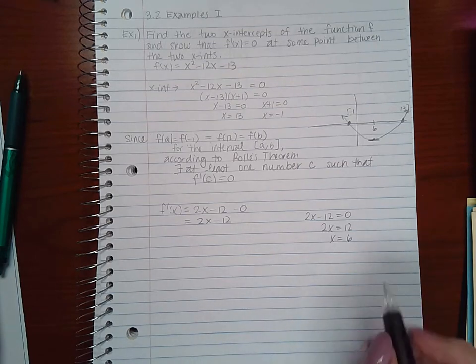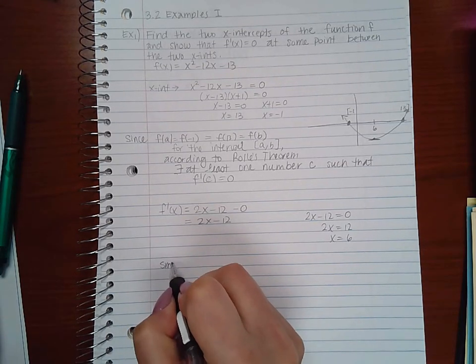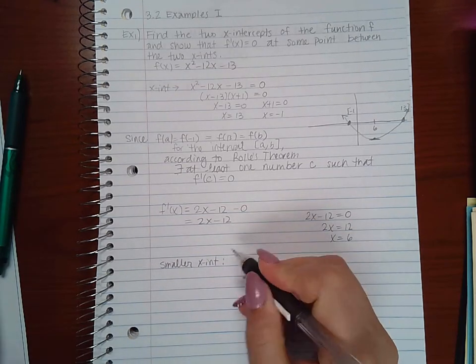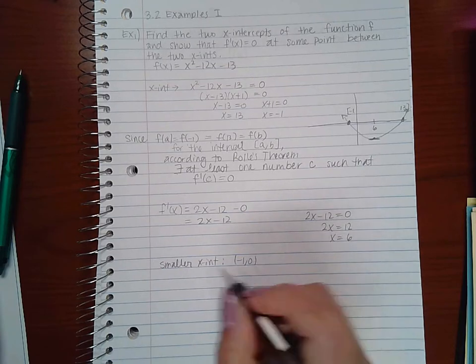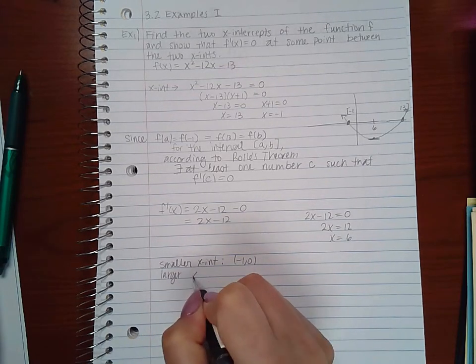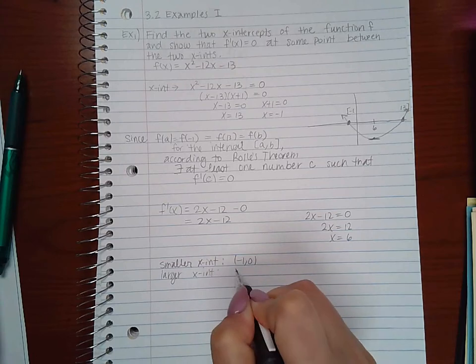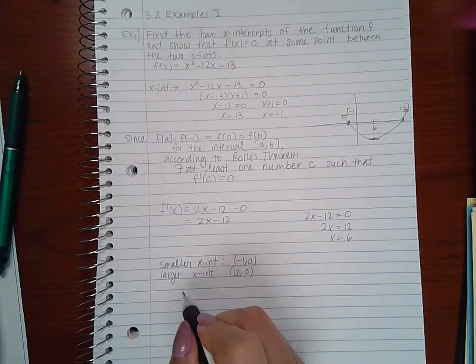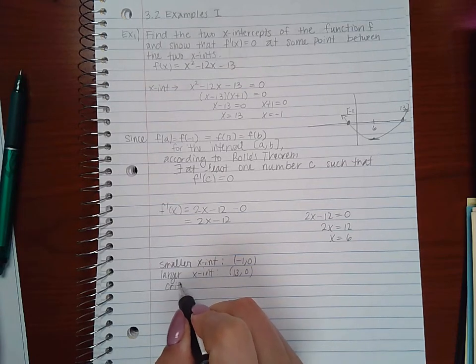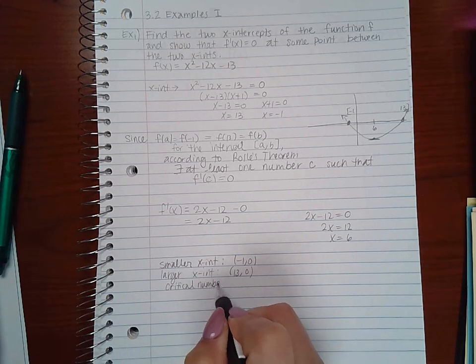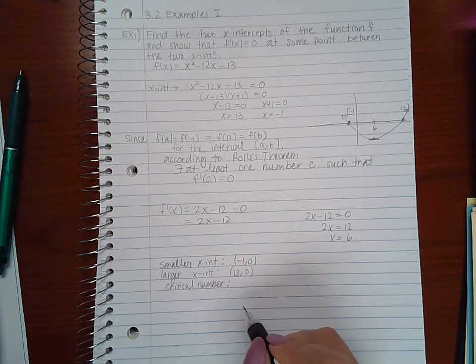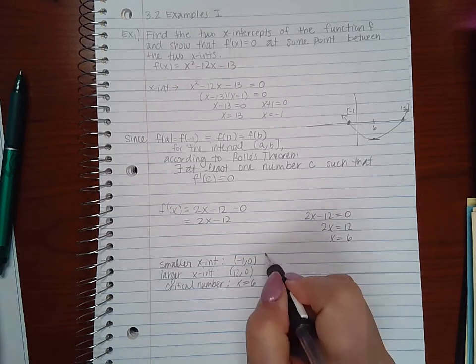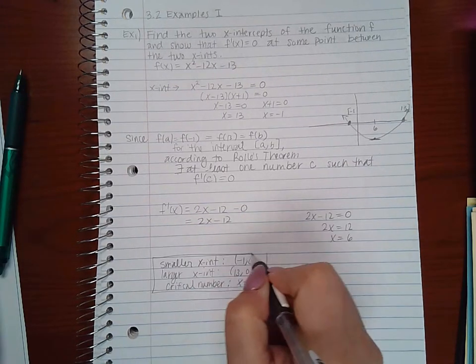So then in the computer, it will ask you what is the smaller x-intercept. And that's going to be negative 1 and 0. What is the larger x-intercept? That will be 13 and 0. And then it would also ask you for the critical number. So what is that value that Rolle's theorem guarantees us exists? That was x equal to 6.